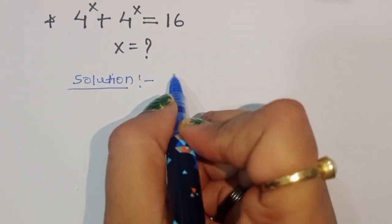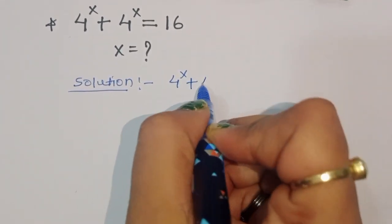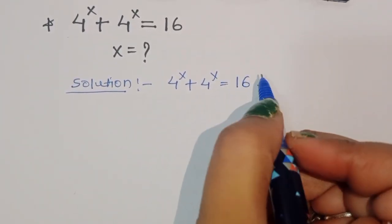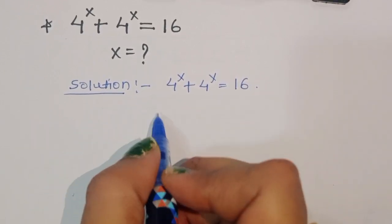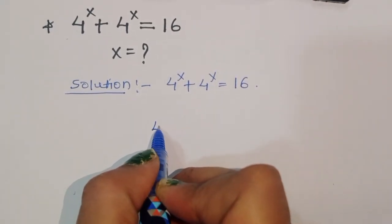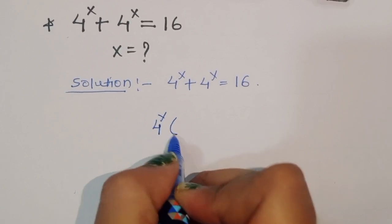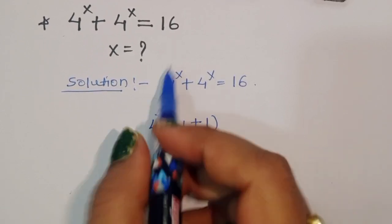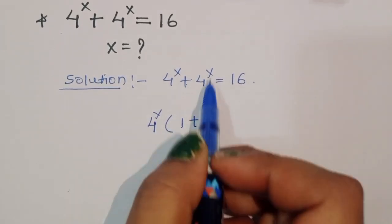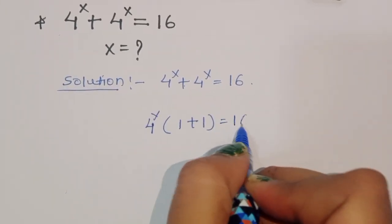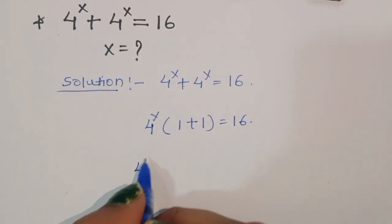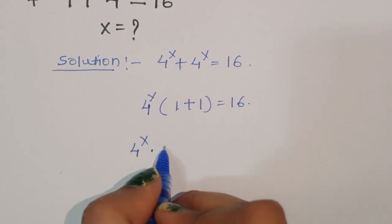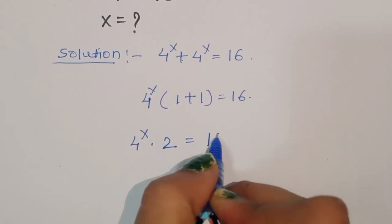4 power x plus 4 power x is equal to 16. We can write this by taking out the common factor 4 power x: 4 power x times (1 plus 1), which gives us 4 power x times 2 is equal to 16.